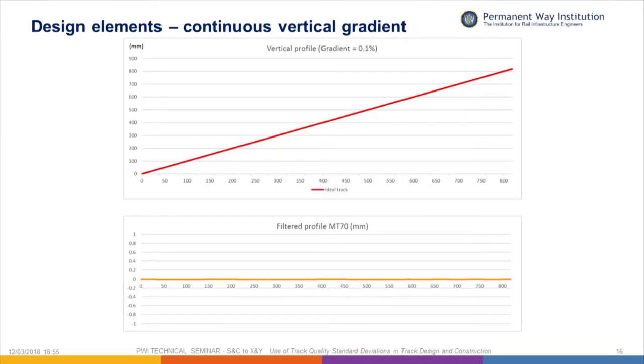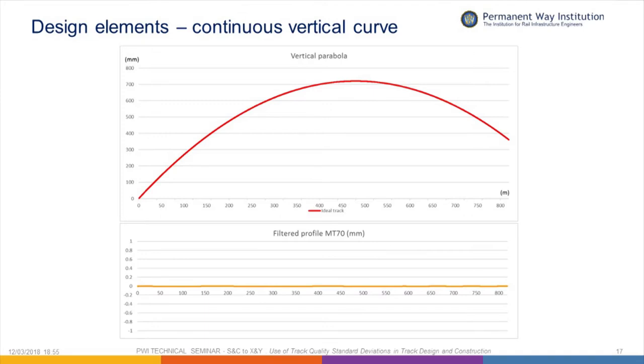Our design geometry doesn't consist of cosine waves — it consists of, for instance, a continuous vertical gradient. When we filter that, it actually produces zero. What about a circular curve, a vertical parabola, or a constant-radius curve in alignment? When we filter those, we again get zero output. Our design vertical profile only consists of straight gradients, straight cant ramps, and vertical parabolas, so having looked at this we would expect our filter applied to that design geometry to produce zero — as we saw, it didn't, and included all that strange variation.